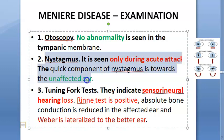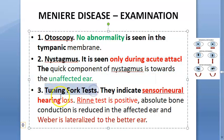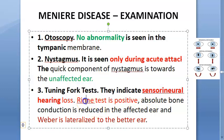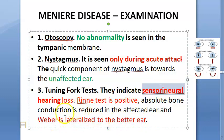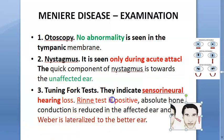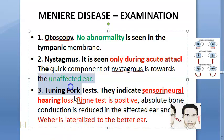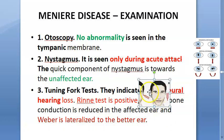Tuning fork tests indicate sensorineural hearing loss, which is elicited as a sign by the examiner. In sensorineural hearing loss, Rinne's test is positive and Weber's test lateralizes to the better ear — the ear without sensorineural hearing loss. You should be familiar with how these tuning fork tests are performed.